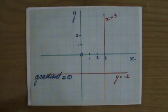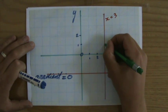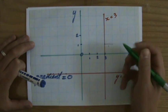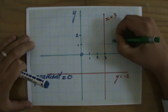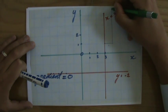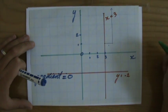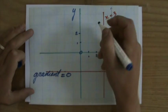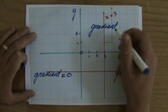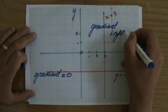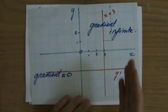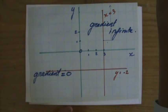Now the vertical line. That's a little bit funny, because if I stand here on my line and I go one step to the right, how many steps do I go up to be back on my line? Well, that is going to take forever basically. So we say that the gradient of a vertical line is a special one — the gradient of a vertical line is infinite, because it takes you an infinite, endless amount of steps up to be back on your line.